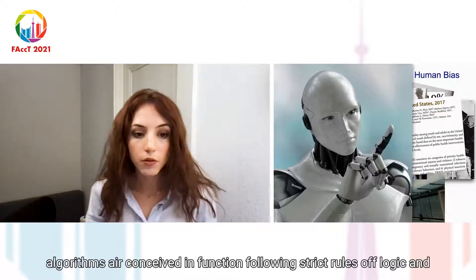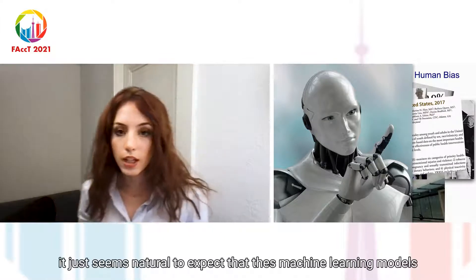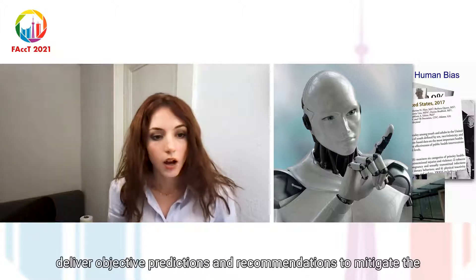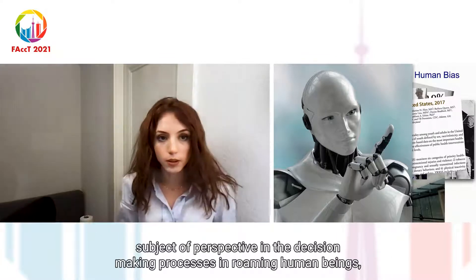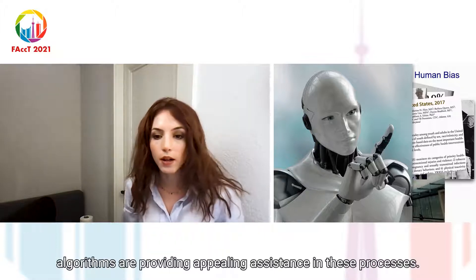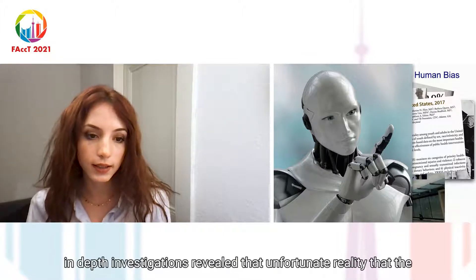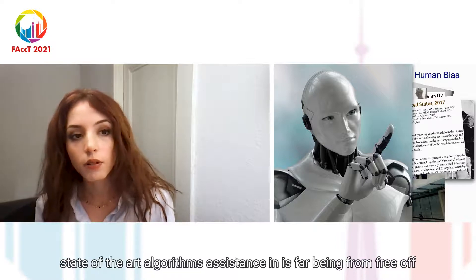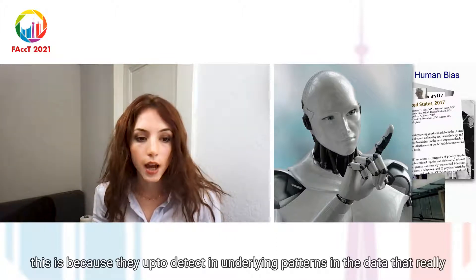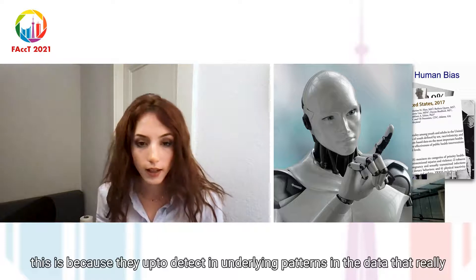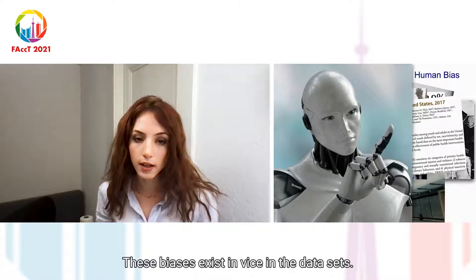All of these examples show that humans have a tendency to display unfair behaviour. On the other hand, algorithms are conceived following strict rules of logic and algebra. It is natural to expect that these machine-learned models deliver objective predictions and recommendations. To mitigate the subjective perspective in decision-making processes involving human beings, algorithms provide an appealing assistance. Unfortunately, in-depth investigations reveal the unfortunate reality that state-of-the-art algorithms are far from free of biases, because they detect underlying patterns in the data and unintentionally learn and maintain existing biases in the datasets.